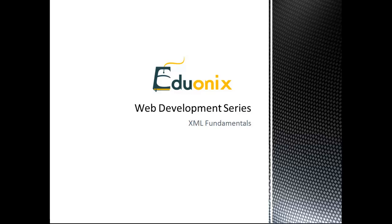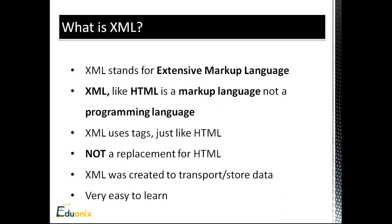XML stands for Extensible Markup Language. It is like HTML in the sense that it's a markup language, but it's not a programming language - programming languages can make decisions and have conditional statements. XML and HTML differ in that HTML is used to display data in a browser, while XML is used to structure data. It has nothing to do with what you see; it just stores it.